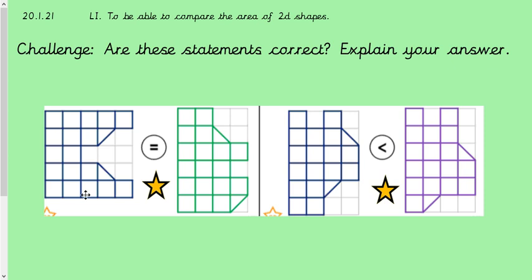So you need to count how many squares there are, work out the area of each shape, and then you need to decide whether the symbol in the middle is correct. So just to point out, they also have half squares.